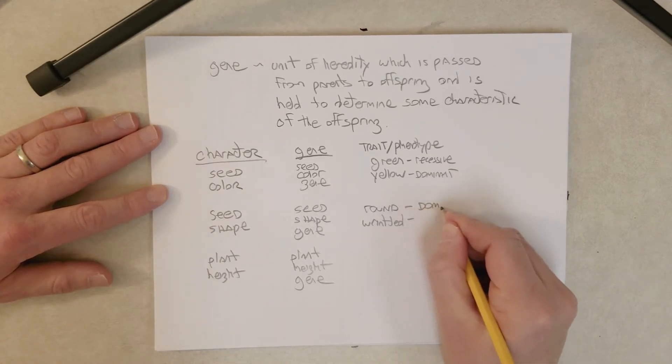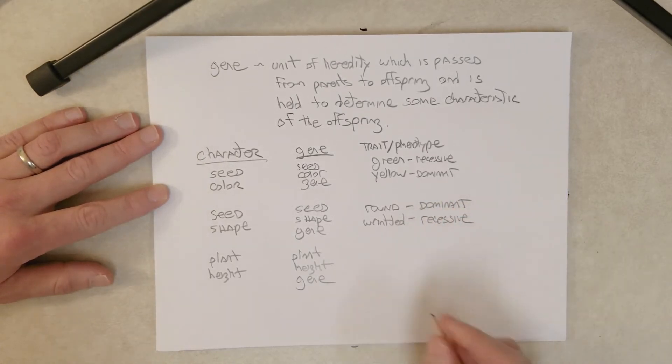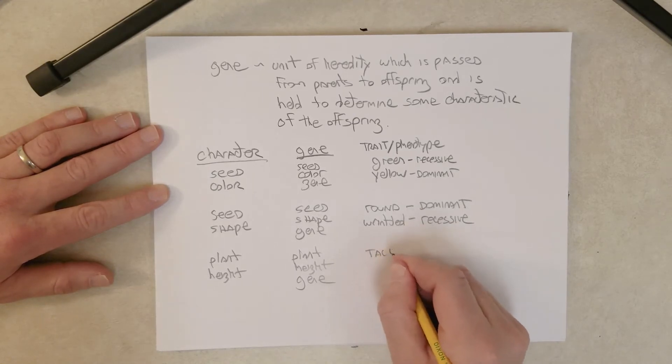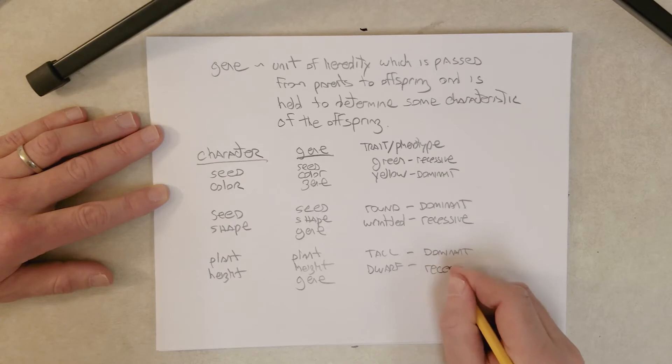Now, for round and wrinkled, round is dominant, wrinkled is recessive. And for tall and dwarf, tall is dominant, and dwarf is recessive.